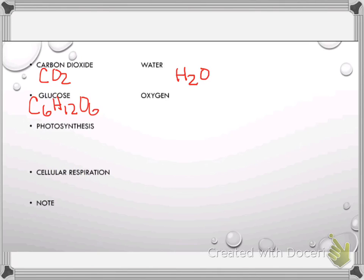then glucose is C6H12O6. I think I scratched out photosynthesis and cellular respiration here, and I will come back to those two here in a minute.